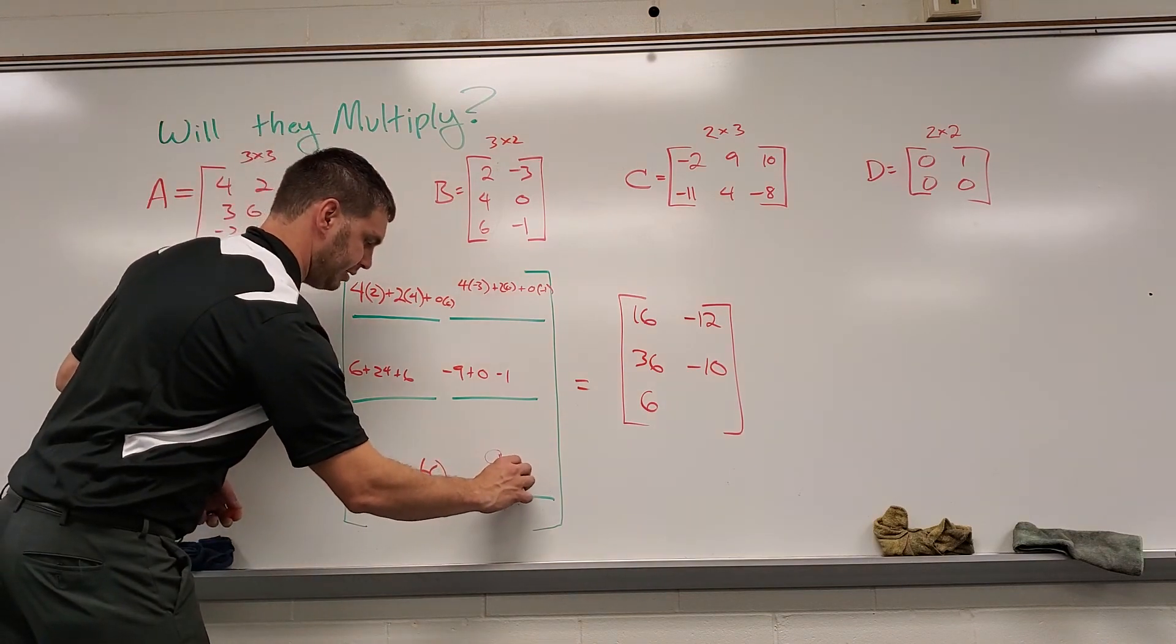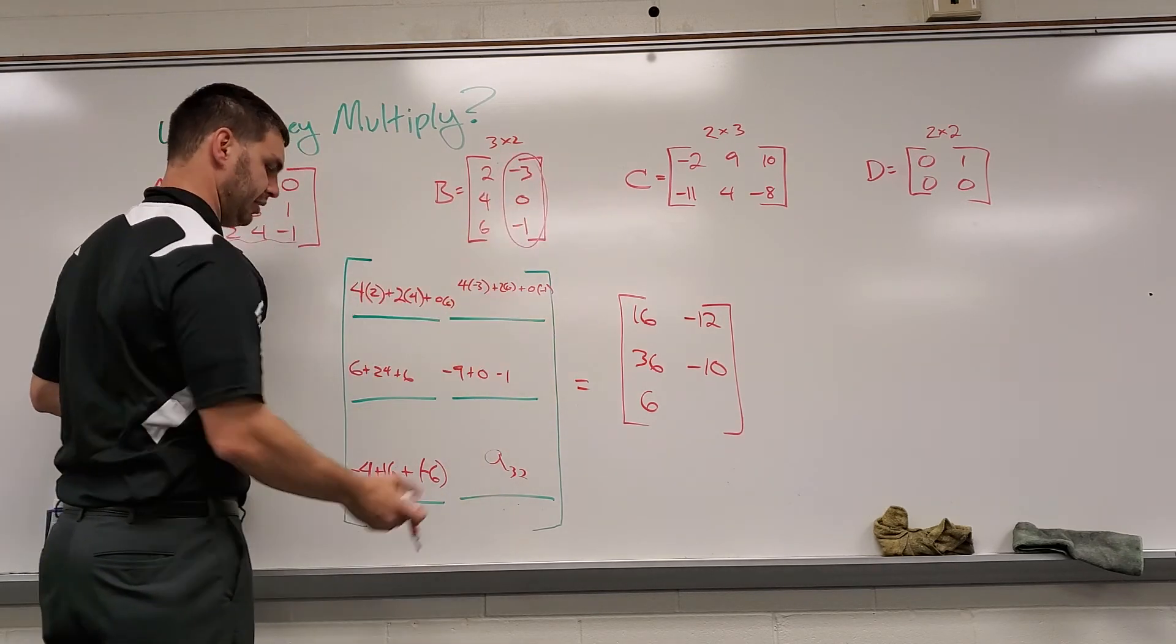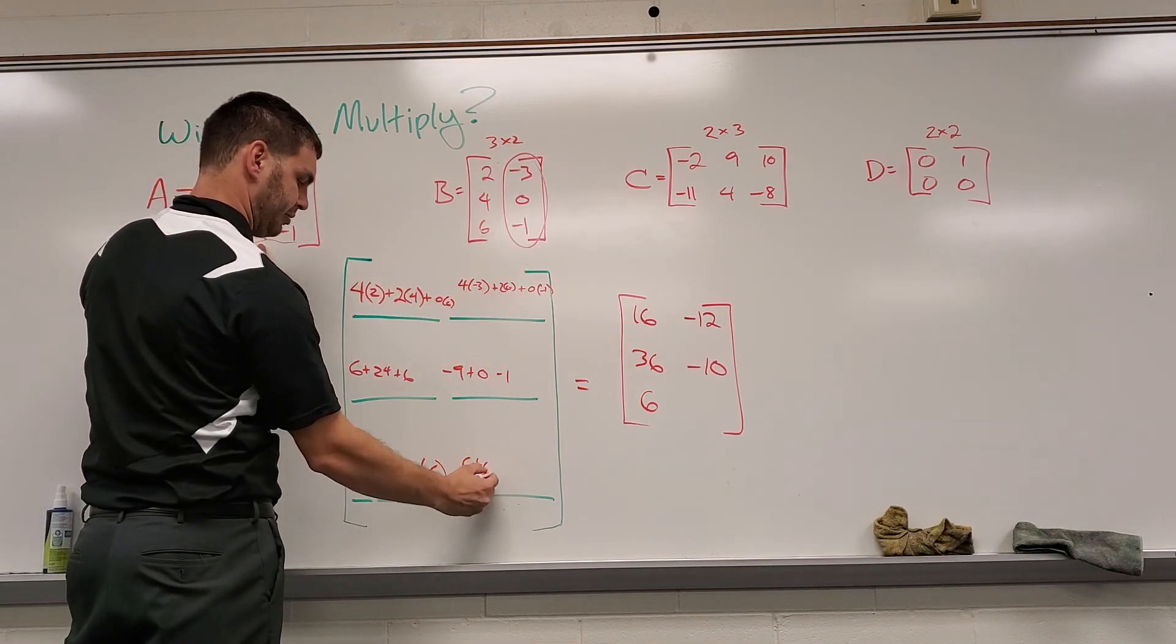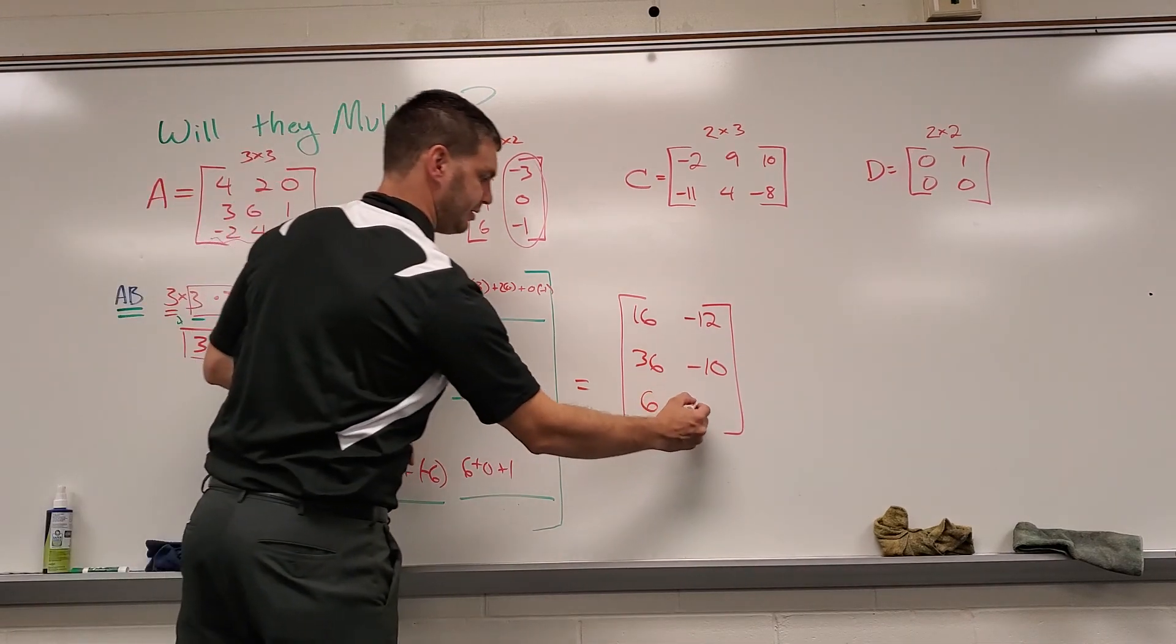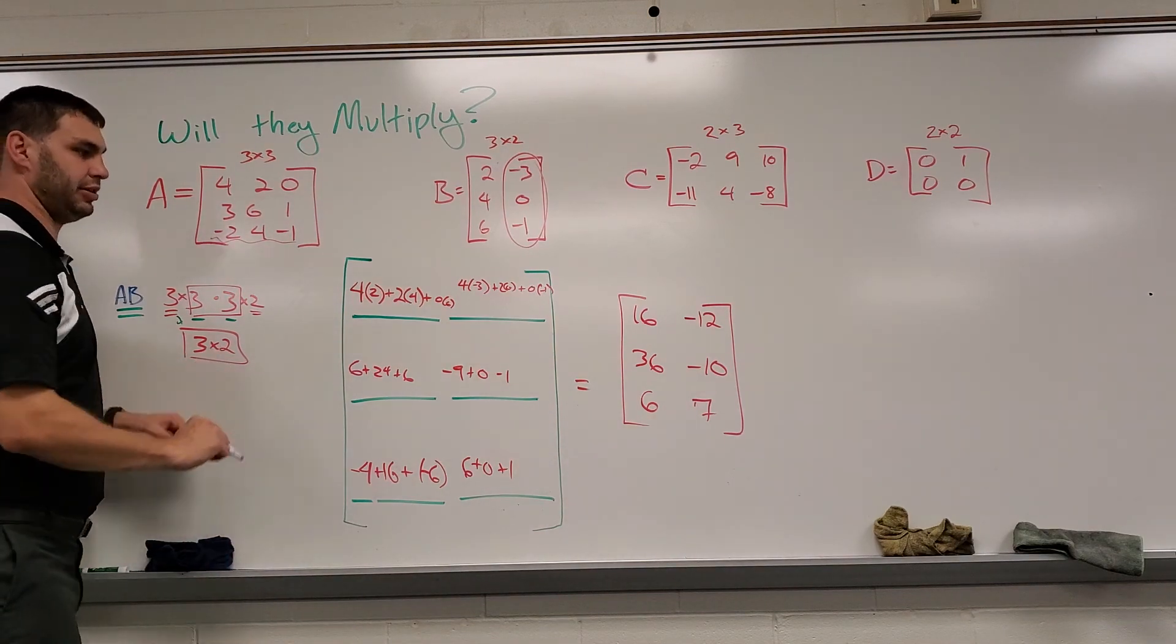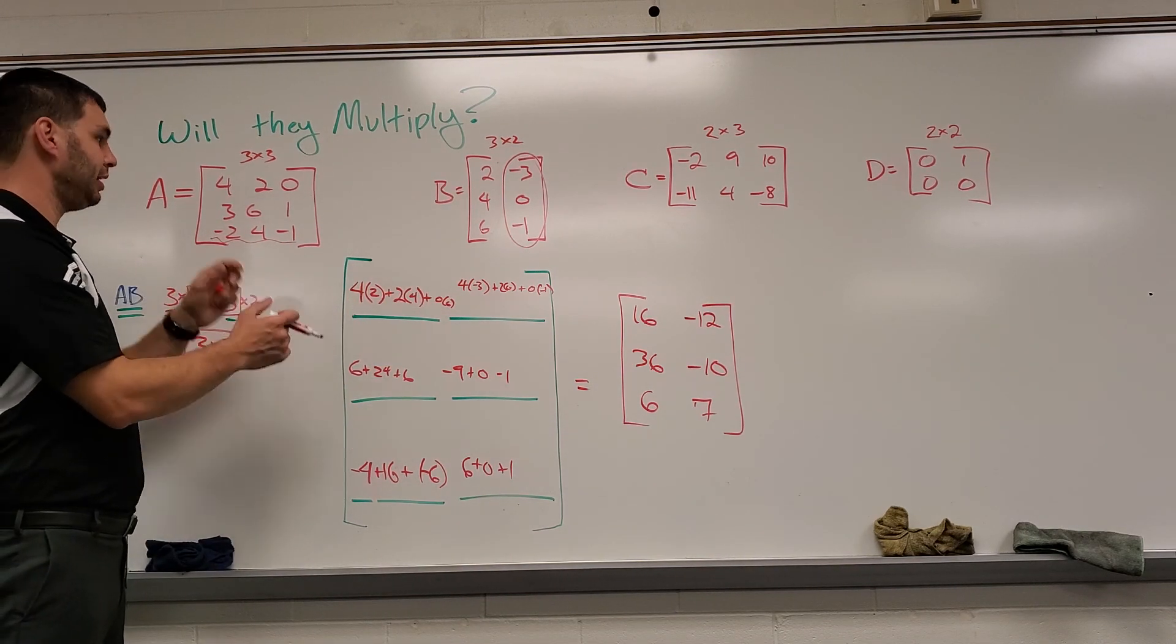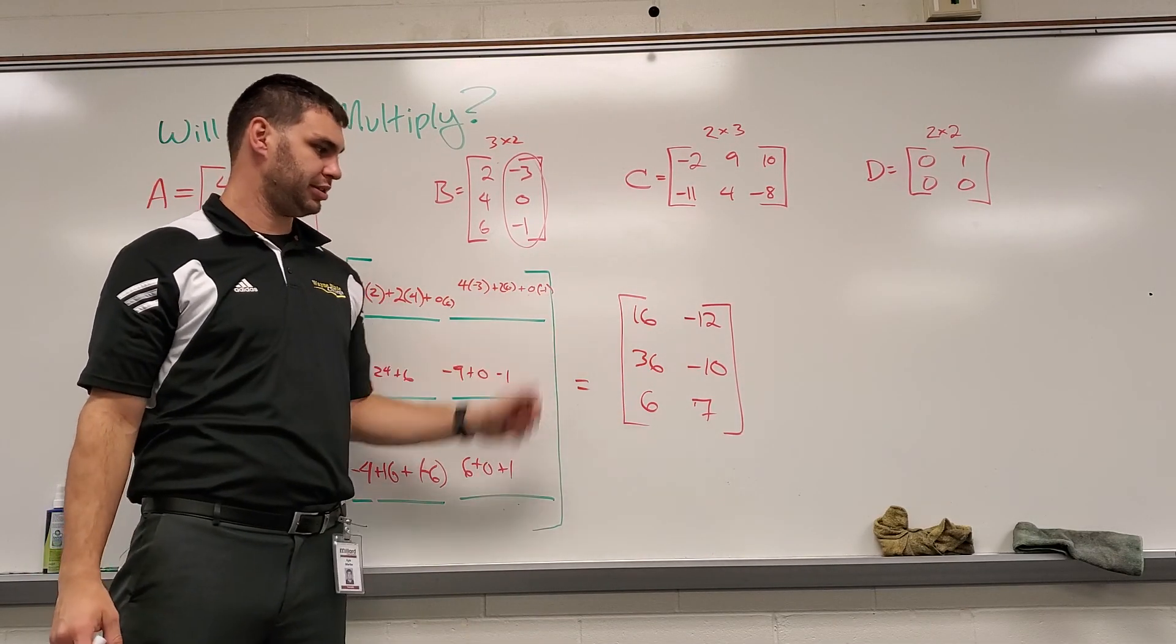Then the last one, this would be A sub three two. So again, third row, second column, multiply these together. Negative two times negative three is a positive six. Four times zero is zero. Negative one times negative one is a positive one. Six plus zero plus one is seven. So when I multiply these together, remember, we're going to end up with a three by two matrix. And we do three by two, and then after doing all the math, you've got to multiply those two elements together and add them up for each position. We end up with this matrix with those elements.